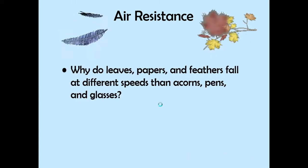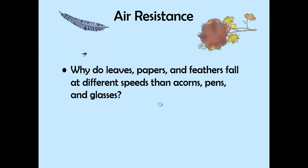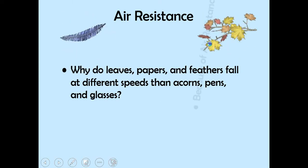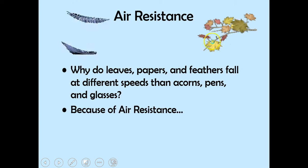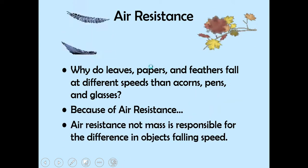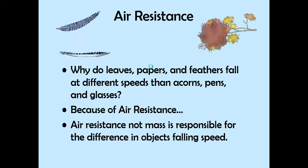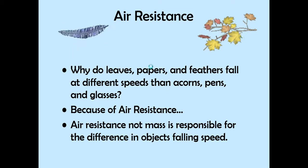Why do leaves, paper, and feathers fall at different speeds than acorns, pens, and glasses? It's because of air resistance. Air resistance, not the mass of the object, is responsible for the difference in the object's falling speed.